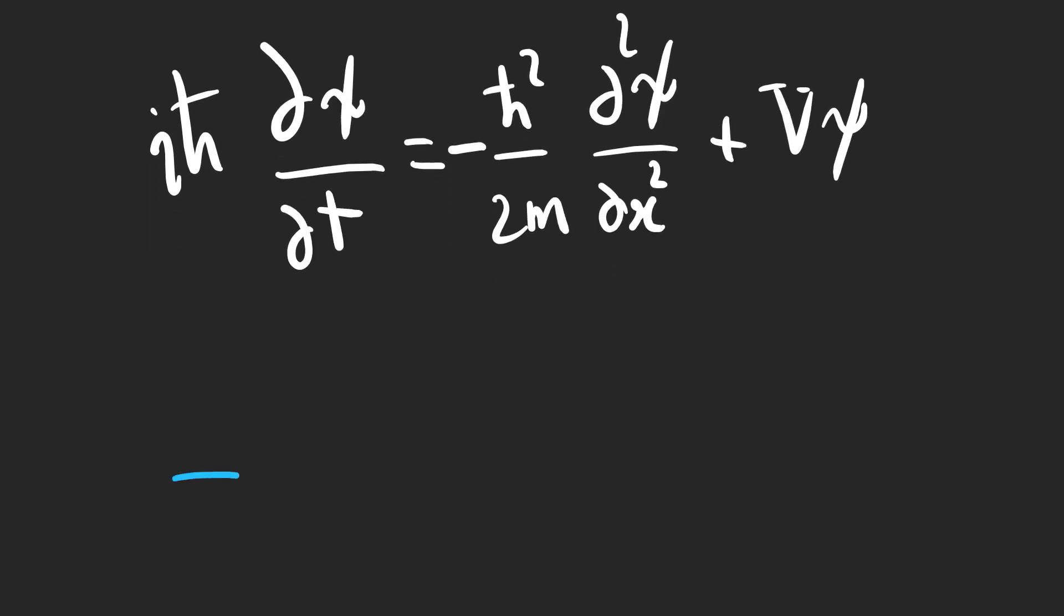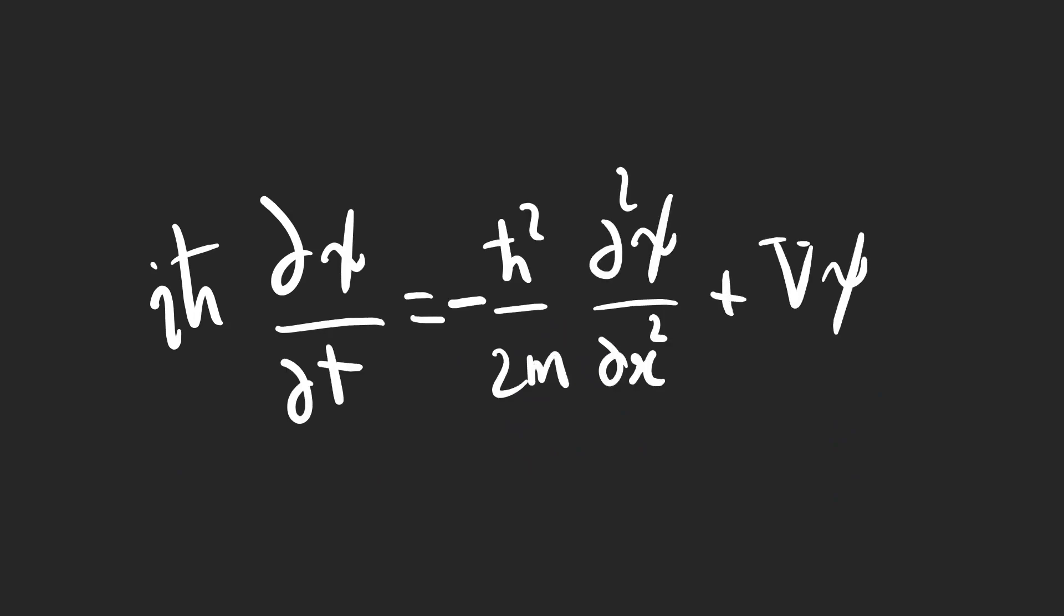For simplicity, we just consider a particle which is constrained to move in one direction, x. It can just move along this axis. The Schrödinger's equation for this particle is like this.